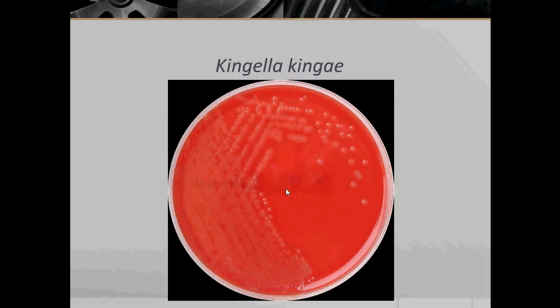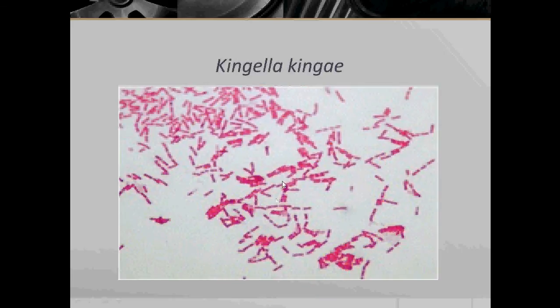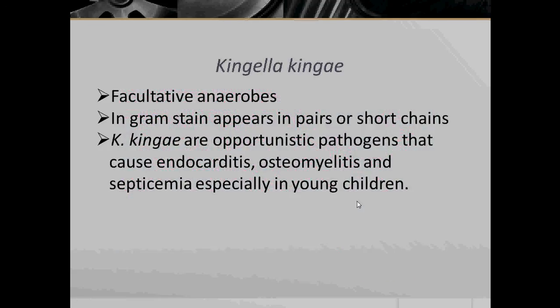Here we see Kingella kingae under microscopic view — they form short chains. Kingella kingae are facultative anaerobes and in Gram stain appear in pairs or short chains. They are opportunistic pathogens that cause endocarditis, osteomyelitis, and septicemia, especially in young children. We will stop here for now — stay tuned for part 2. Thank you.